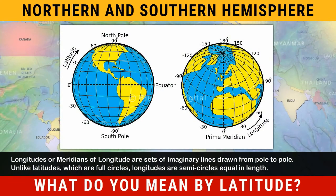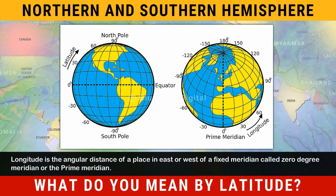Longitudes, or meridians of longitude, are sets of imaginary lines drawn from pole to pole. Unlike latitudes, which are full circles, longitudes are semicircles equal in length. Longitude is the angular distance of a place in east or west of a fixed meridian called zero degree meridian, or the prime meridian.